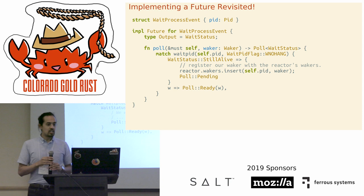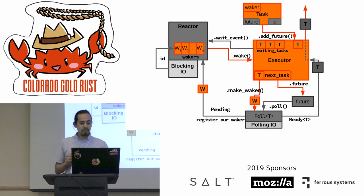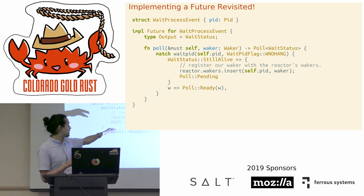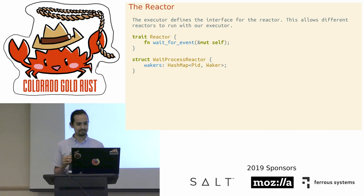Returning to our poll implementation for WaitProcessEvent: when we're Pending, we register our waker with the reactor — calling the reactor, indexing into its wakers, and inserting our PID with the waker we were given. This illustrates the decoupling: our future is gray in the diagram, but it simply passes the waker along without needing to know anything about its implementation.